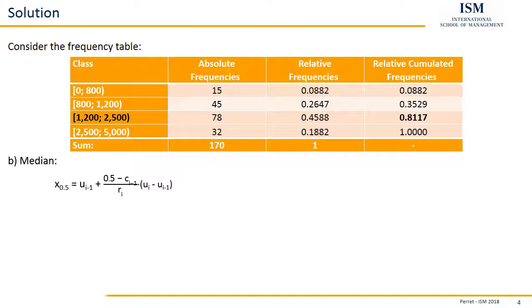So what do the different parts of the formula mean? The u_i minus 1, that's the lower bound of the median class. So here it's the 1,200. Then we have 0.5 minus c_i minus 1. That's the relative accumulated frequency of the class before the median class. So here it's the relative cumulative frequency of 0.3529.